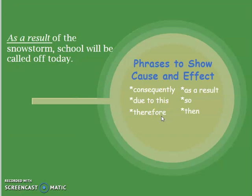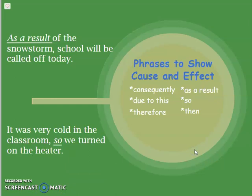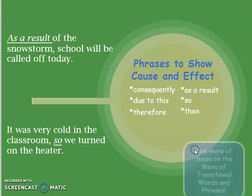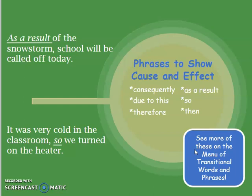'As a result of the snowstorm, school will be called off today.' This is a way to use transitional phrases to show that because this happened, this other thing happened. We are very good at identifying cause and effect when we're reading, but now we have to practice how to create the idea of cause and effect when we're writing, and using transitional phrases is a great way to do that. 'It was very cold in the classroom, so we turned on the heater' — this is just a smoother way to connect those ideas.